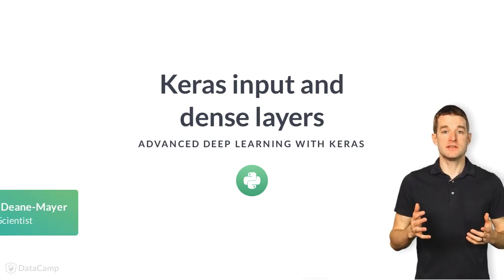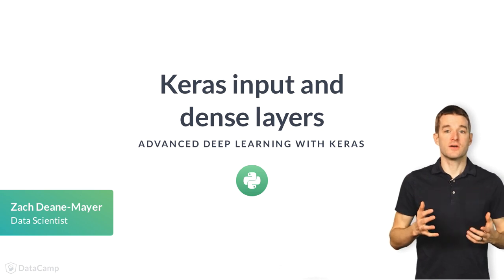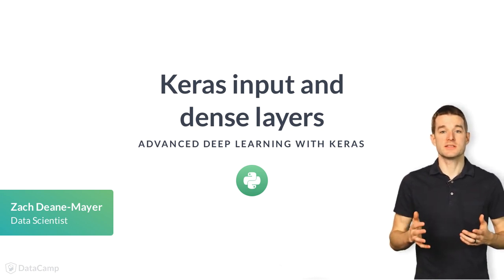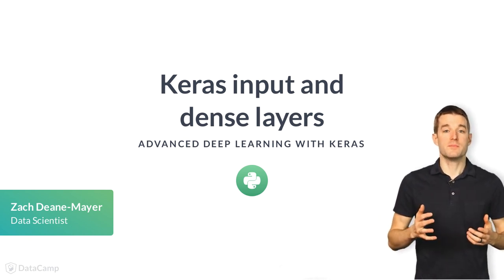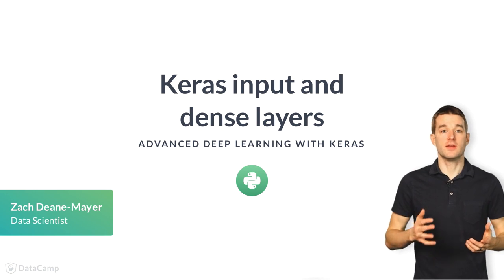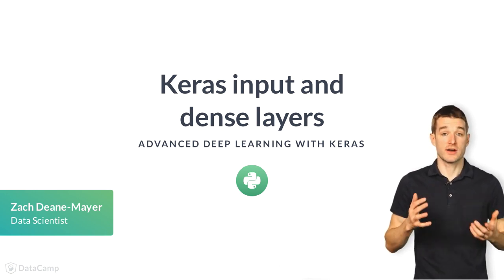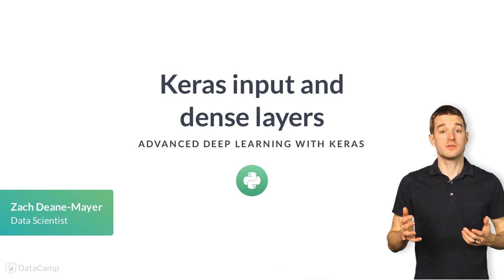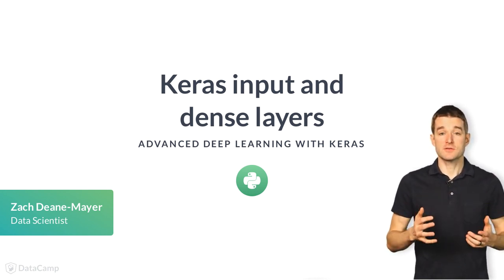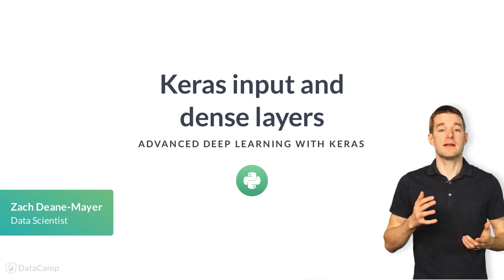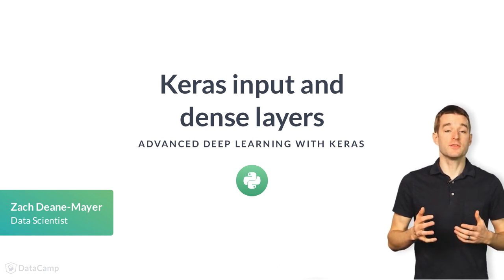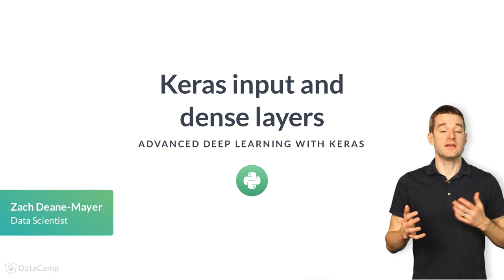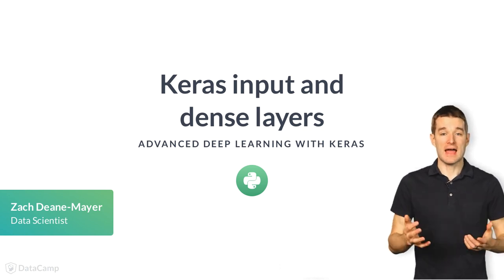Hi, I'm Zach Dean-Mayer, and in this course I'll be teaching you advanced deep learning concepts using the Keras Functional API. You will learn how to build functional Keras models, including advanced topics such as shared layers, categorical embeddings, multiple inputs, and multiple outputs. The Keras Functional API is extremely simple, yet immensely powerful. By the end of this class, you will build a model capable of solving a regression and a classification problem at the same time.